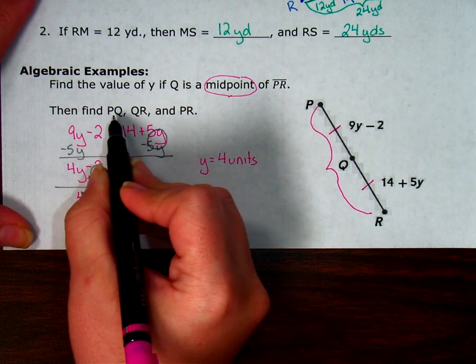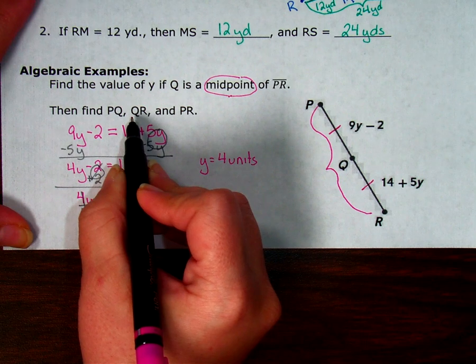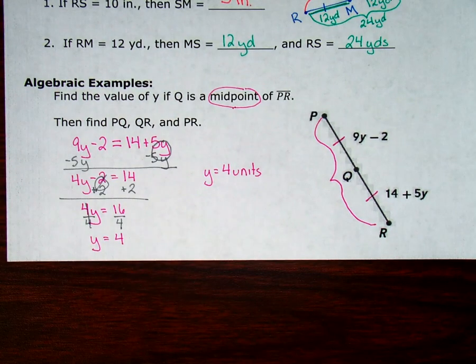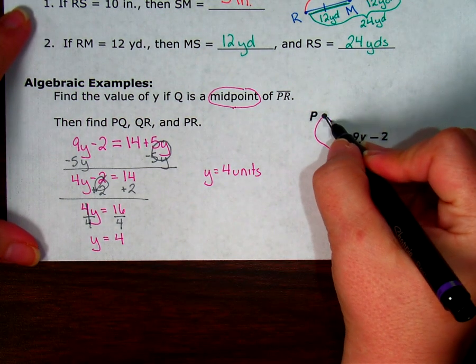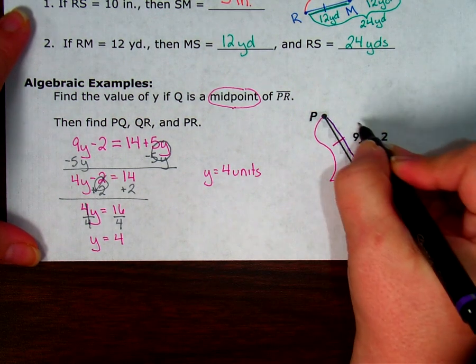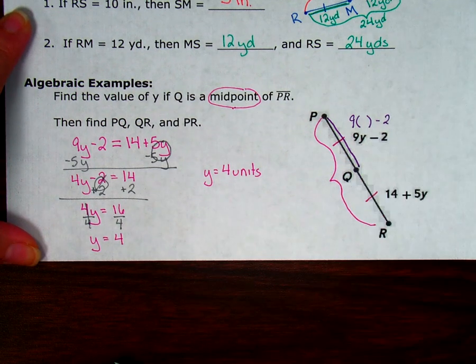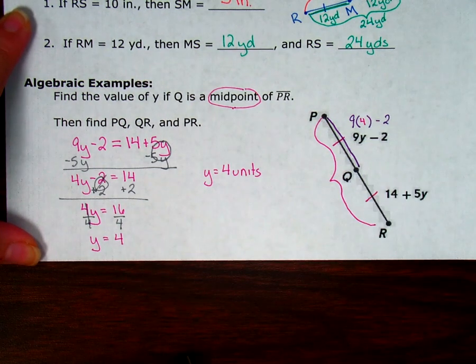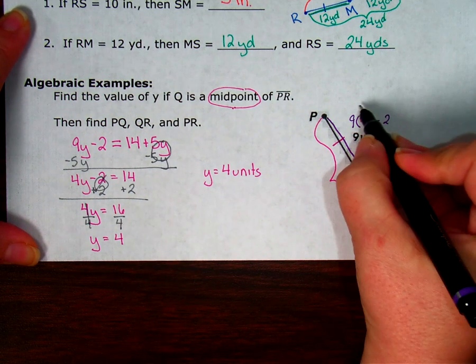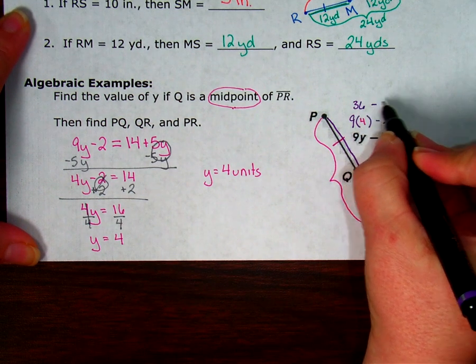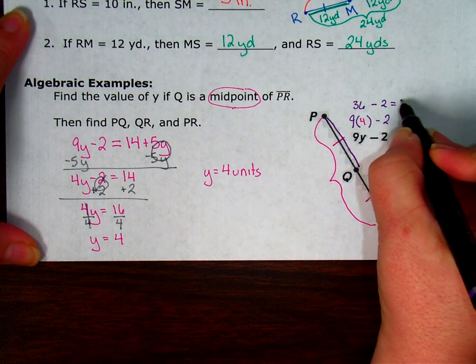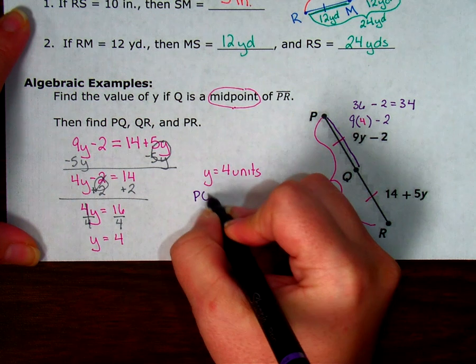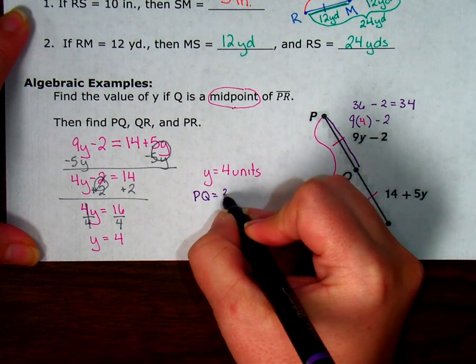So I did find the value of y. But wait, there's more. I also want to find PQ, QR, and PR. So for PQ, I know that PQ from P to Q is 9 times y minus 2. But I know what y is now. Y is 4. So I can do 9 times 4 is 36, and 36 minus 2 is 34. So from P to Q, it's 34 units.